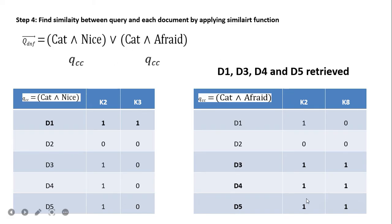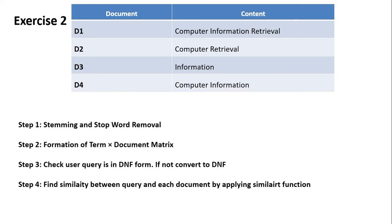For 'cat AND afraid,' keywords k2 and k8 are used. Checking the combination, we find that documents d3, d4, and d5 match. The final result is the OR between the two qcc results, so we retrieve documents d1, d3, d4, and d5. These are documents in which either 'cat AND nice' or 'cat AND afraid' is present.